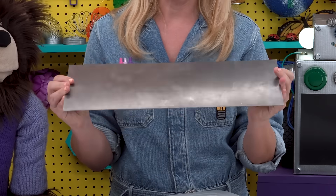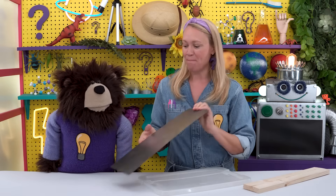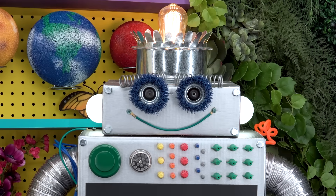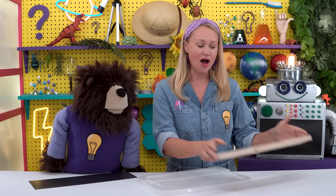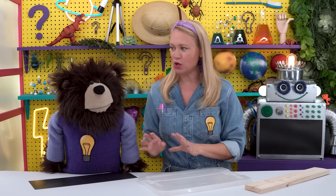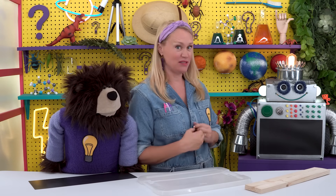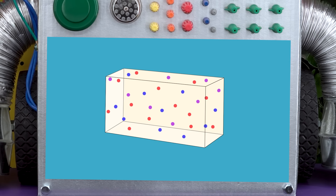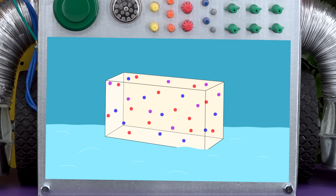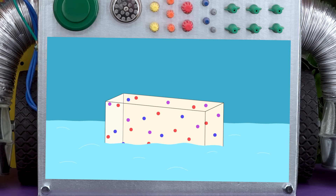Bolte, can you show us what the molecules of wood would look like under a microscope, zoomed in really, really close? Look at that. You see how the molecules in the piece of wood are spread apart? Because the molecules are spread so far apart, this wood has less density and is more likely to float when placed in water.